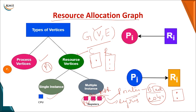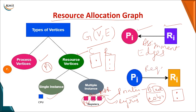Once vertices are decided, you need edges connecting processes and resources. If an edge goes from a resource to a process, it is an assignment edge, indicating the resource has been given to that process. If an arrow points from a process to a resource, it is a request edge, indicating that process is requesting that resource.